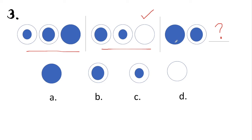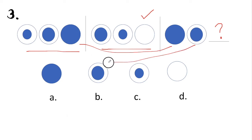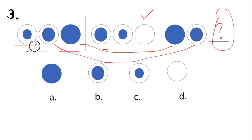When we go to the last set, we are given the biggest circle again, followed by a slightly smaller inner circle — which is actually a mirror image of our first set. This gives us the idea that the correct answer should be that circle, which means the correct answer is letter C. Letter C is the answer for number three.